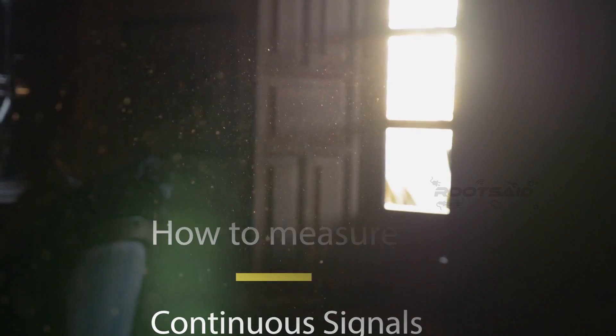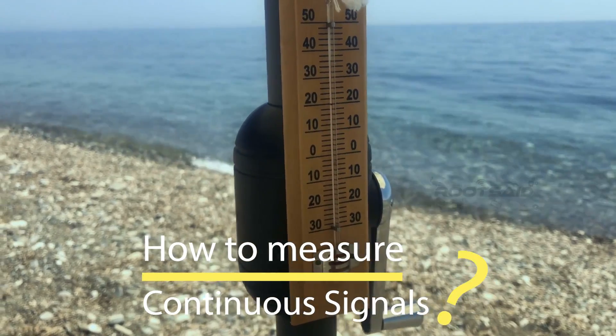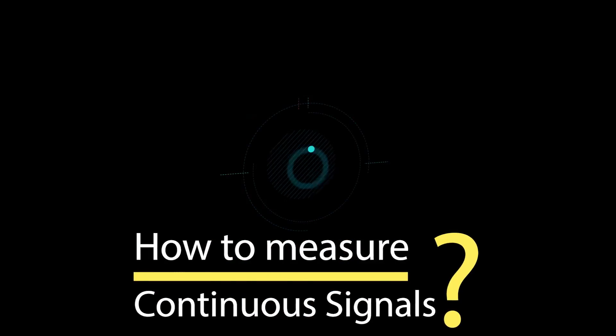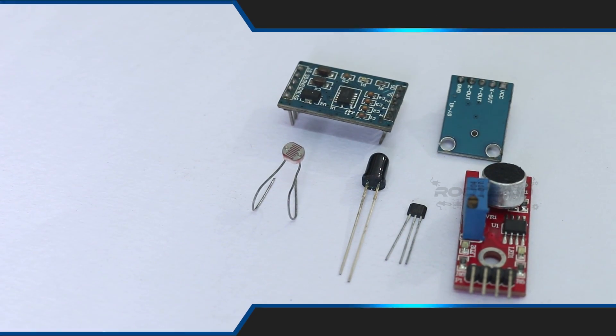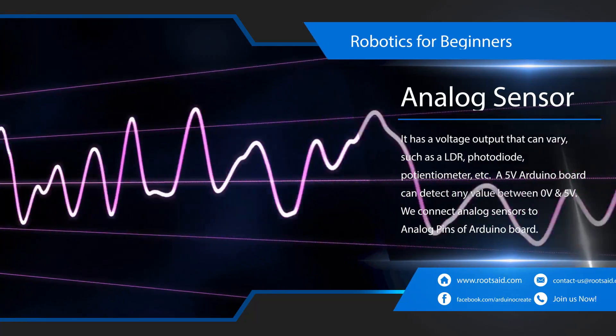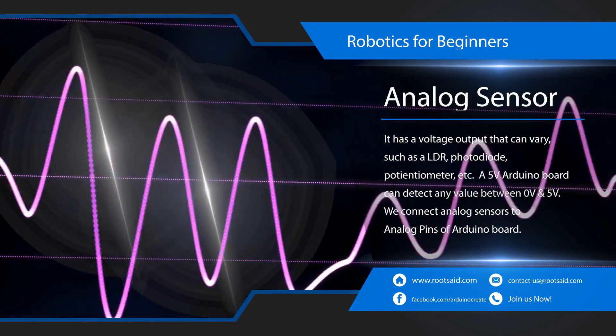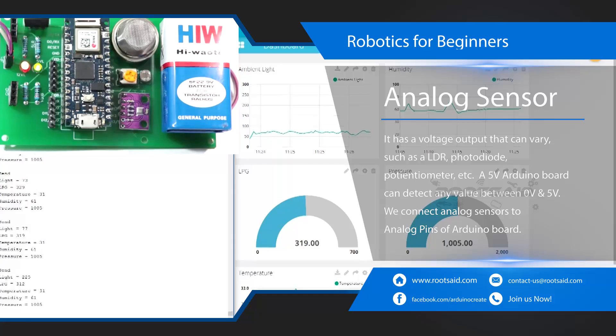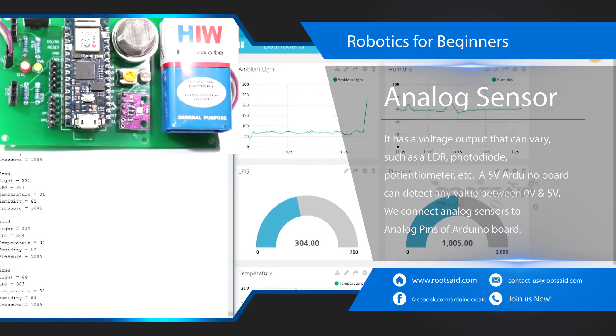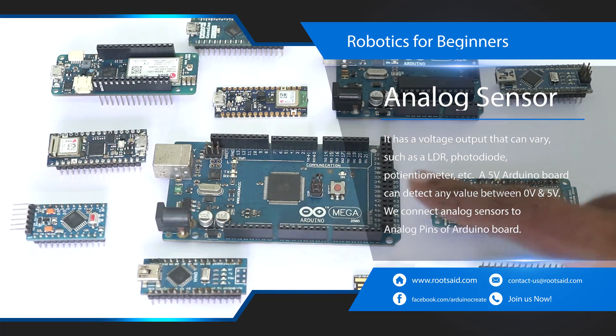What if you want to measure ambient light using LDR or temperature using temperature sensor? What if you want to measure values between zeros and ones? That's why we use analog sensors. Analog sensors are very simple. It has a voltage output that can vary with respect to the external physical quantity. This way, you can measure the correct value of light and not just black or white.